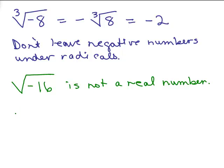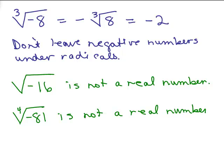It's only if it's an odd power that you can do that. What if I had the fourth root of negative 81? You can't have the fourth root of a negative number. It's not a real number.